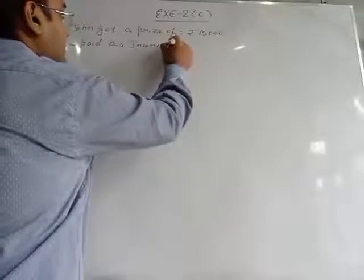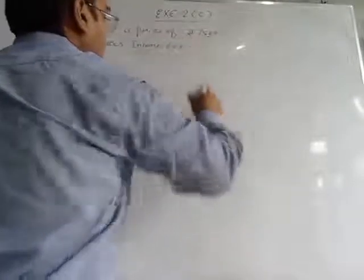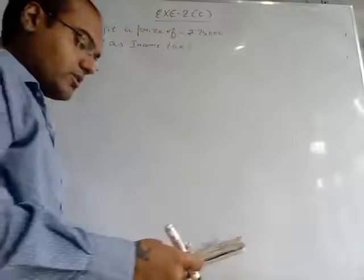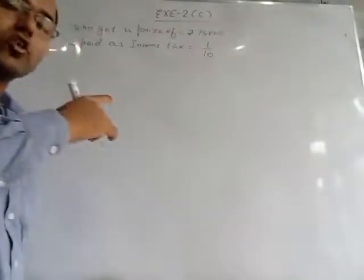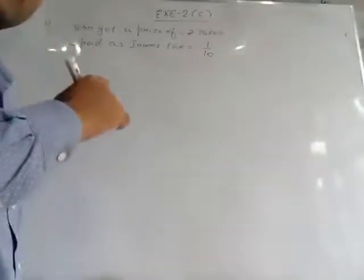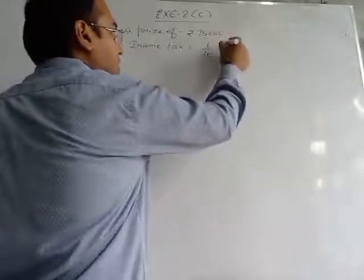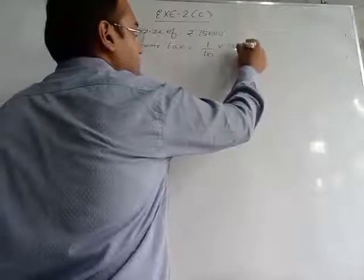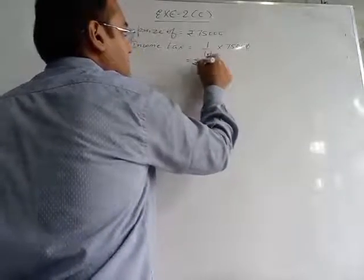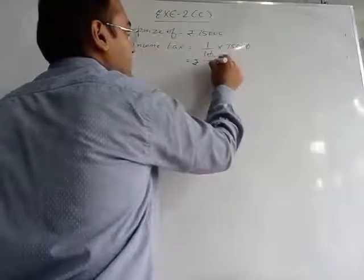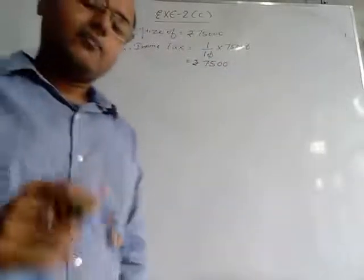He paid 1/10 as income tax. Since 1/10 is a fraction, we multiply it with the total price of 75,000. The last zero gets cancelled. So Rs. 7,500 he had given as income tax.